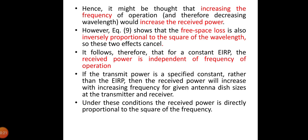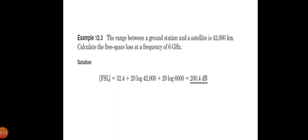Now let us move on to a problem. The range between the ground station and satellite is 42,000 km. Calculate the free space loss at a frequency of 6 GHz. Substituting these values directly into the equation FSL equals 32.4 plus 20 log R plus 20 log F, where R is 42,000 km and F is 6 GHz, gives the FSL as 200.4 dB.